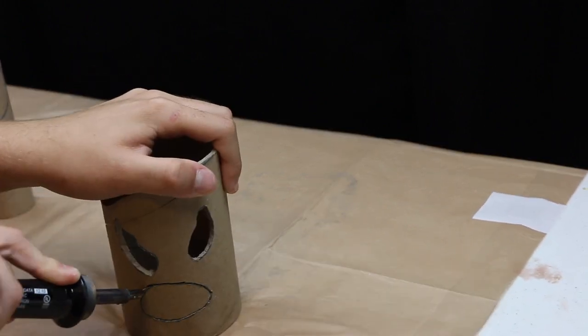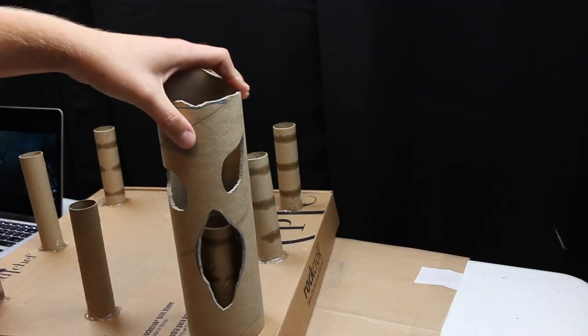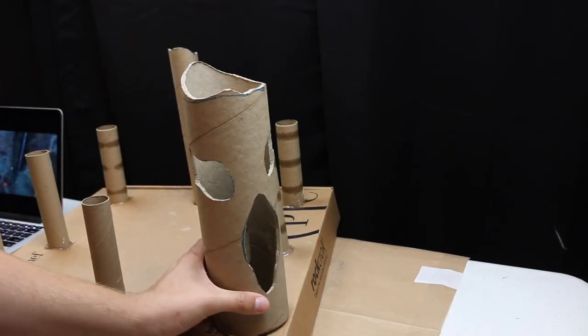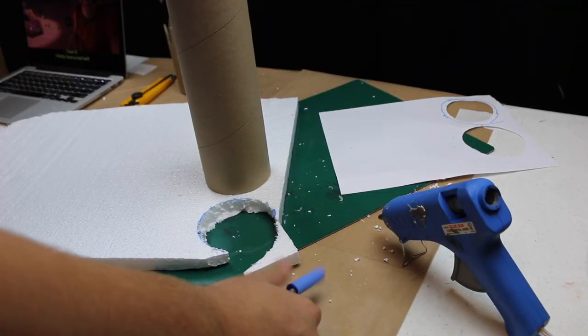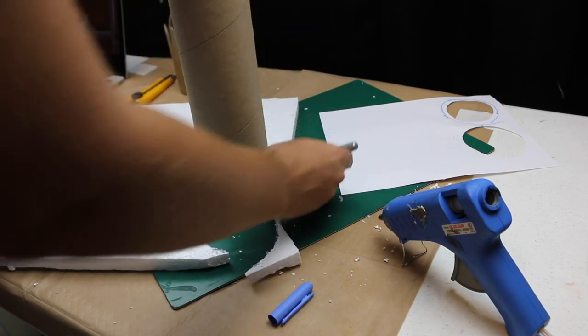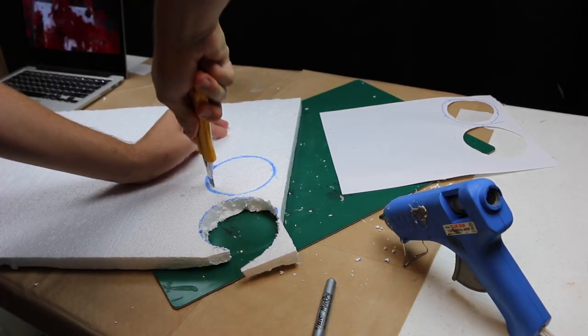Alright, so now we have all of our faces cut out and it should look a little bit like this. And it is time to move on to the next step, which is to cut out some circles. I'm using styrofoam, but you can use some more cardboard if you like. Just trace the circle onto it, cut it out, and put that inside one end of your candle. This is just to hold the tea light candle that we are going to put in later.